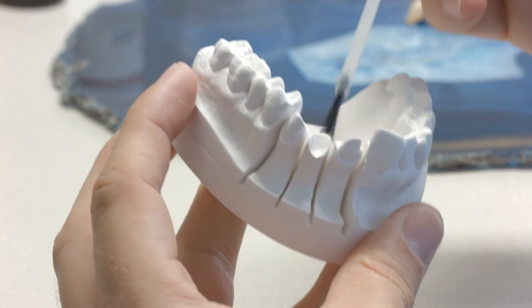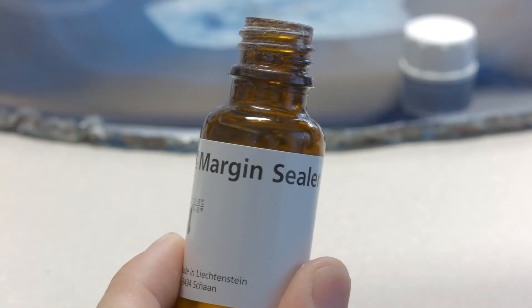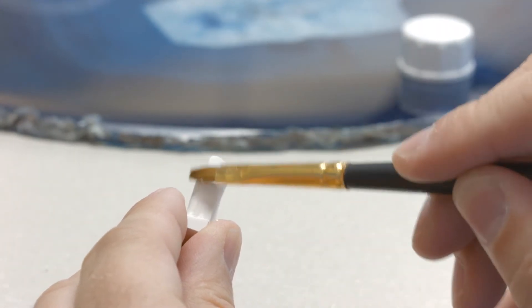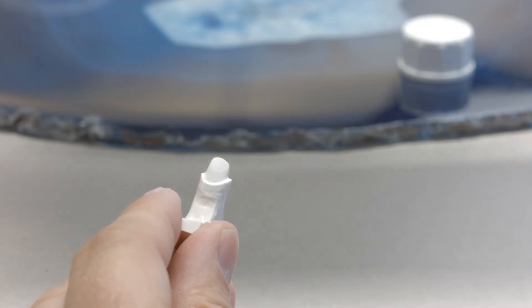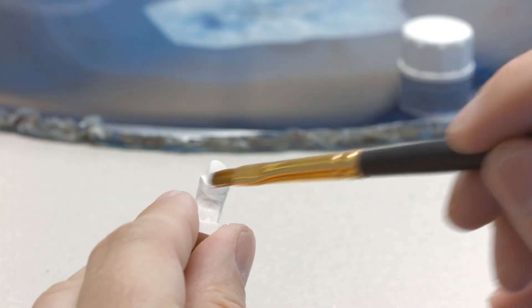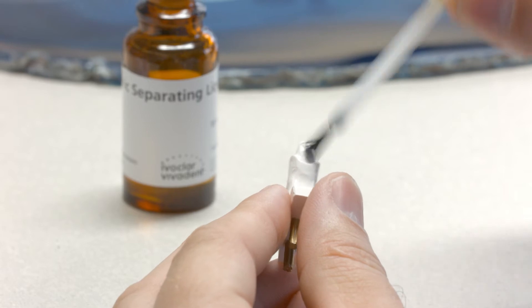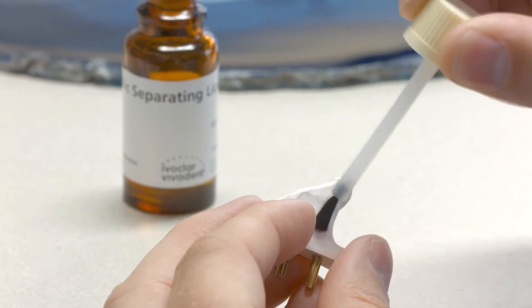Before creating the ceramic margin, additionally seal the margin area of the stone die with IPS margin sealer. Allow IPS margin sealer to dry and then isolate the margin area with IPS ceramic separating liquid. The sealing and isolating steps must be performed before any ceramic material is applied.